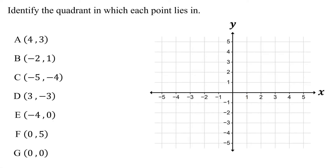In this lesson, you will learn how to identify which quadrant a point lies in on a coordinate plane. As a quick recap, a coordinate plane is made up of a horizontal number line called the x-axis and a vertical number line called the y-axis. These axes divide the coordinate plane into four quadrants.